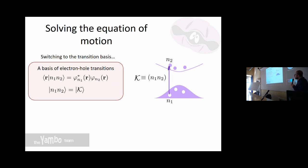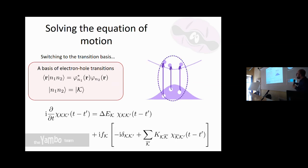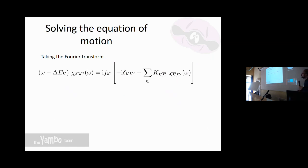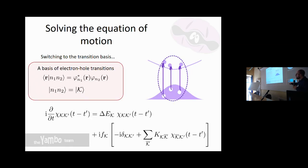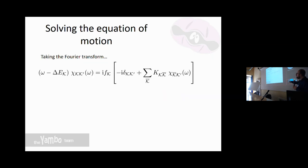As an additional simplification — as Maritza mentioned — since we are dealing with two-particle transitions, we use a transition basis, labeling each valence-to-conduction transition with a single index. This makes the equation simpler, as everything now depends on two indices. We then Fourier transform to frequency domain: the time derivative gives us omega, and now we are basically done.